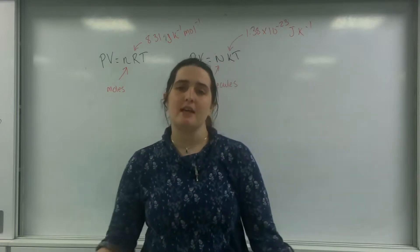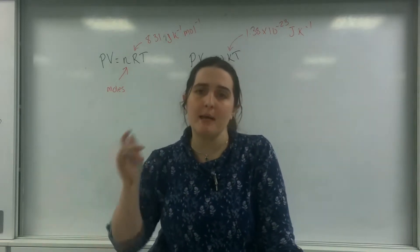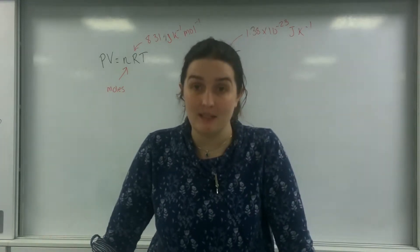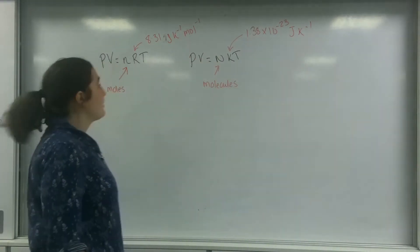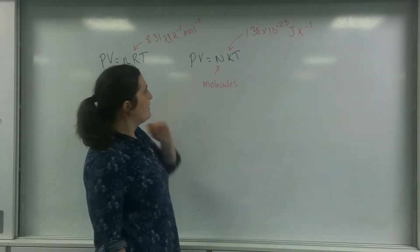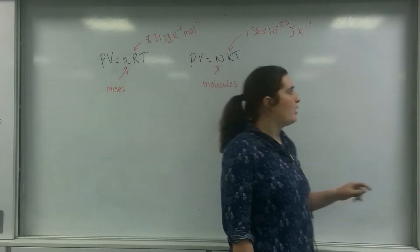Hello and welcome to TL Physics. Today I'm going to give you two examples of how to use the universal gas laws. On the board I have PV equals nRT, where n is the number of moles, and PV equals NKT, which uses the number of molecules.